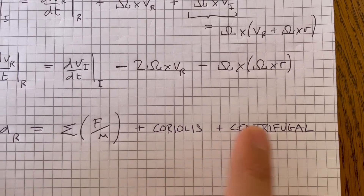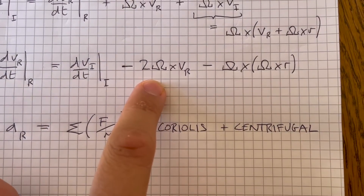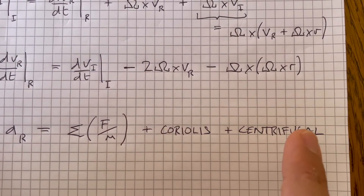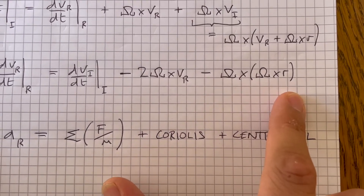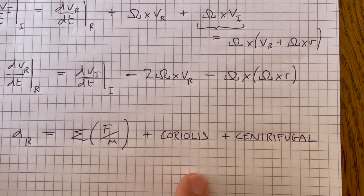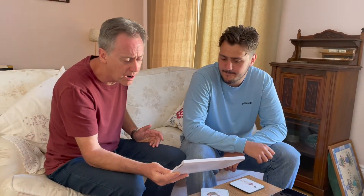the Coriolis force and the centrifugal force — the Coriolis force being two omega cross vr, and the centrifugal force being omega cross (omega cross r). Omega cross v, omega cross omega cross r... I mean, what does that even mean? It looks like you've just done some mathematical tricks and come up with something, but I don't understand it.